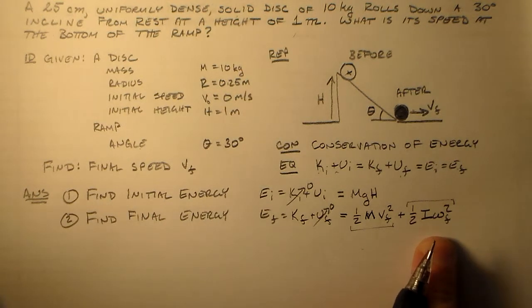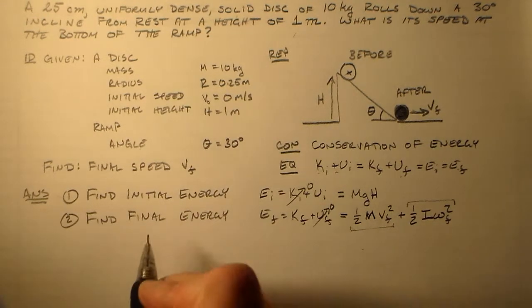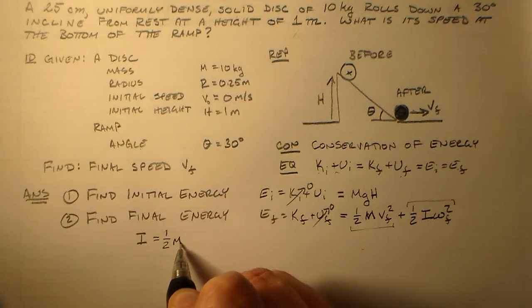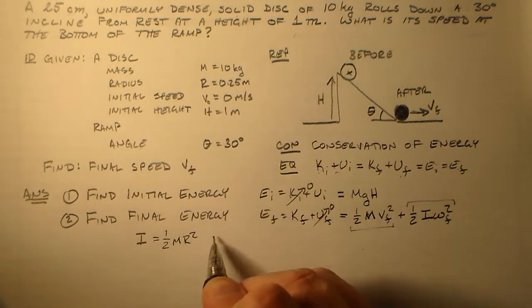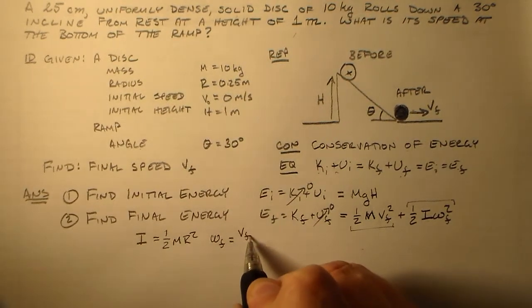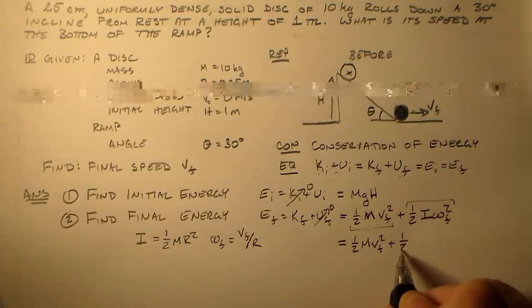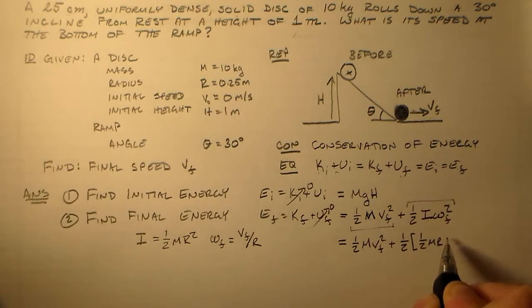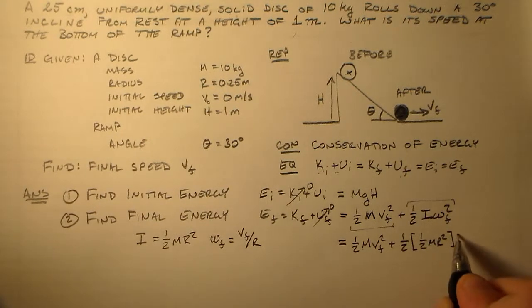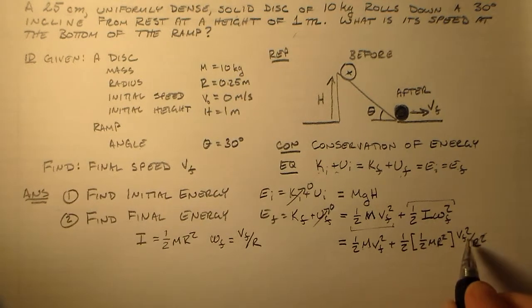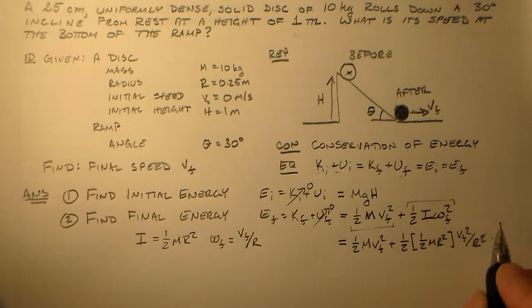So we probably want to go ahead and simplify this somewhat. One way to do that is to say, if I have a solid disk, what is my moment of inertia, I. Well, I is something, in this case, we can just look it up. And in that case, it's one half MR squared. And then we also know that omega F is VF over R. So if we take those two together, we have one half MVF squared plus one half times one half MR squared times VF squared over R squared. That guy cancels that guy.